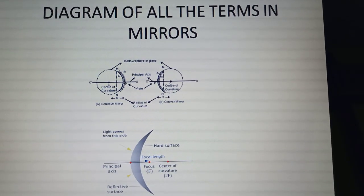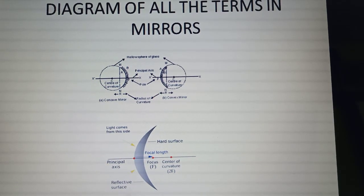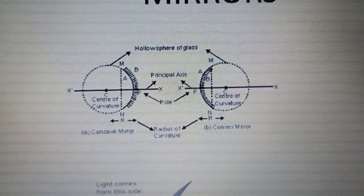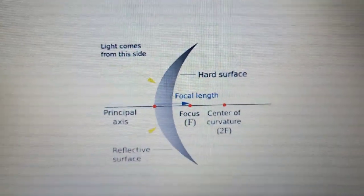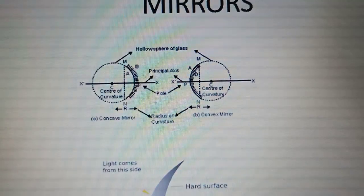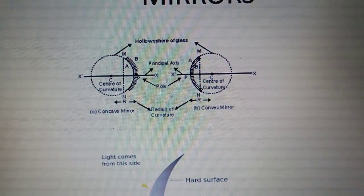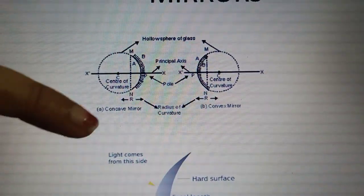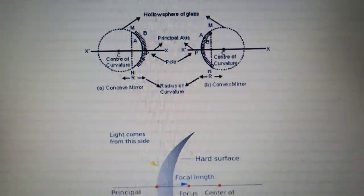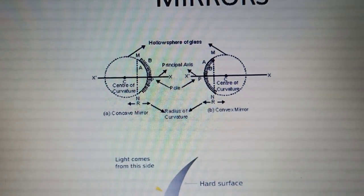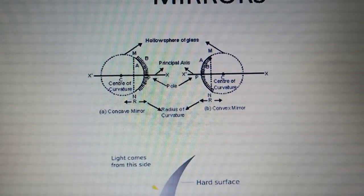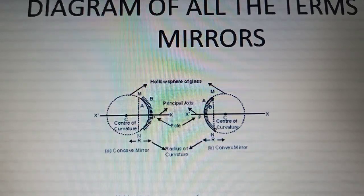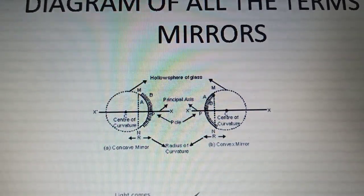I want to end this unit by mentioning the important terms of mirrors. While we explain a mirror, we need to know some important terms: center of curvature, principal axis, principal focus, focal length, radius of curvature, and aperture of the mirror. These are the terms that describe a mirror, and I will explain these terms in my next video.